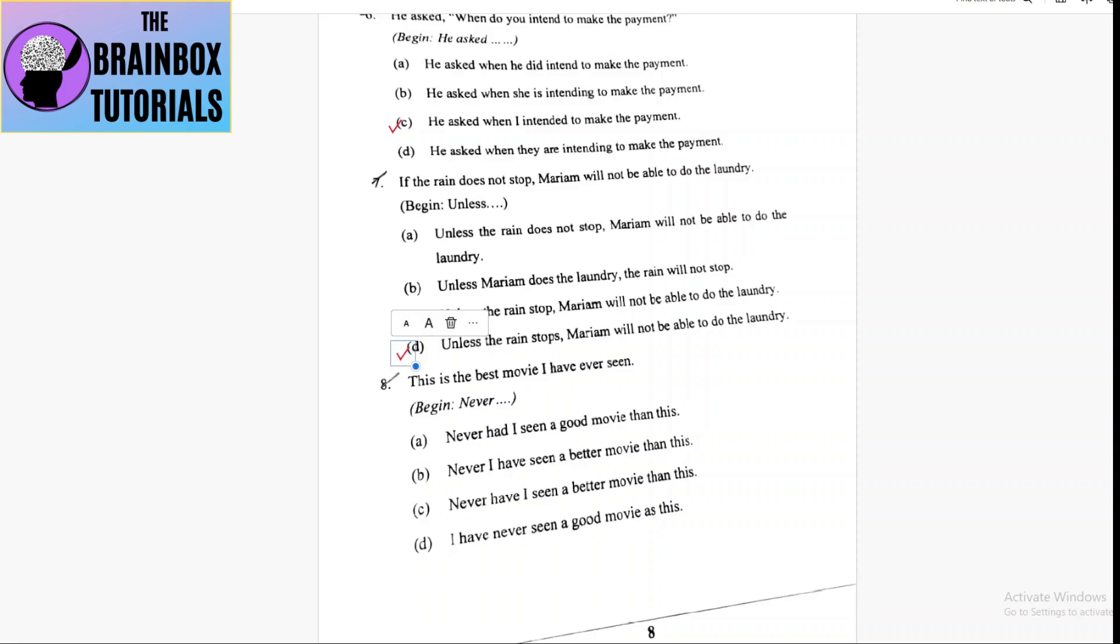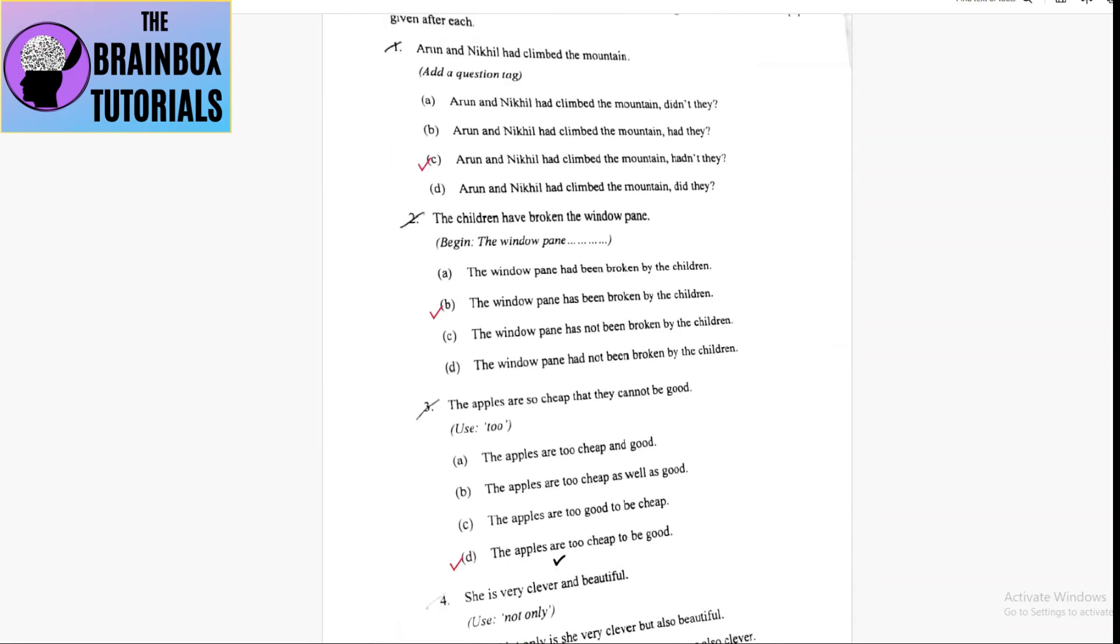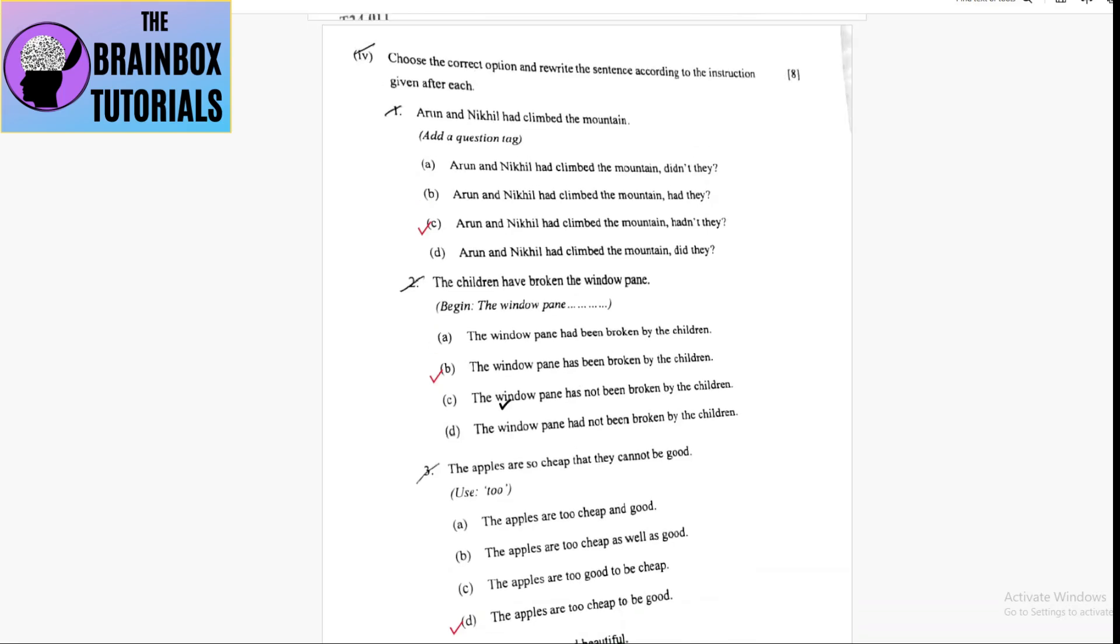Coming to number eight, last one: this is the best movie I have ever seen. Begin 'never'. Option A: never had I seen - no, wrong. Option B: never I have seen - no, wrong. Option C: never have I seen a better movie than this - this is the correct option.